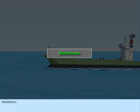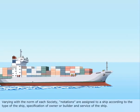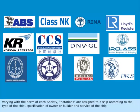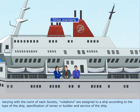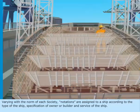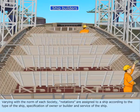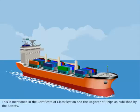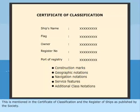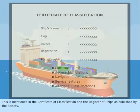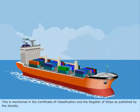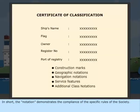Notations. Varying with the norm of each society, notations are assigned to a ship according to the type of the ship, specification of owner or builder, and service of the ship. This is mentioned in the certificate of classification and the register of ships as published by the society. In short, the notation demonstrates the compliance of the specific rules of the society.